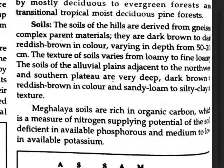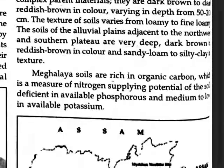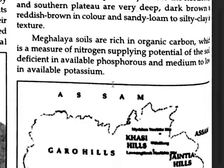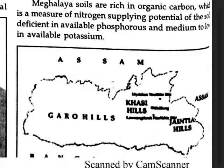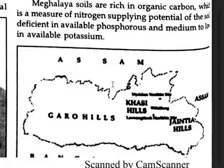The soils are deficient in available phosphorus and medium to low in available potassium. The major hill regions include Garo Hills, Jaintia Hills, and Khasi Hills in Assam.